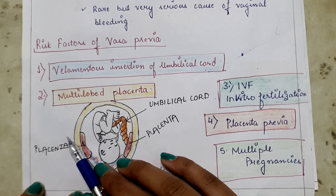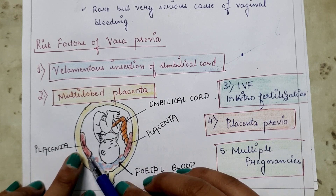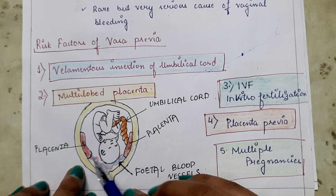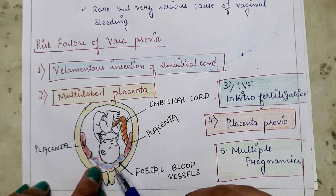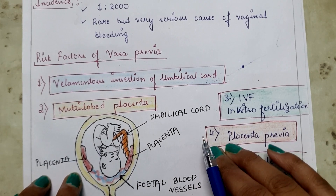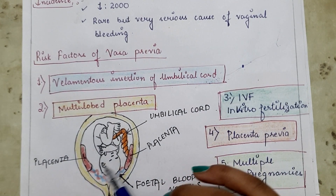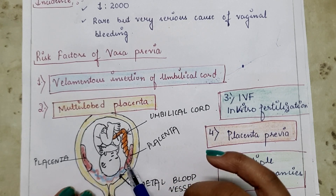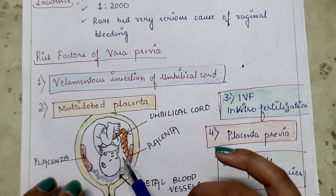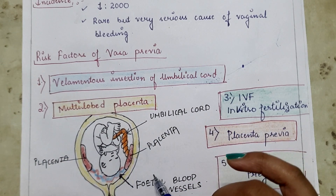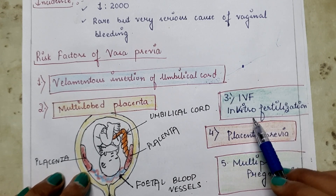The next risk factor is multi-lobed placenta. In a bilobed placenta, the placenta is separated into two lobes, and both lobes are connected with each other by fetal blood vessels, as you can see in this diagram. When the placenta is separated into more than two lobes, that is known as a multi-lobed placenta, and this is also a risk factor for Vasa Previa.